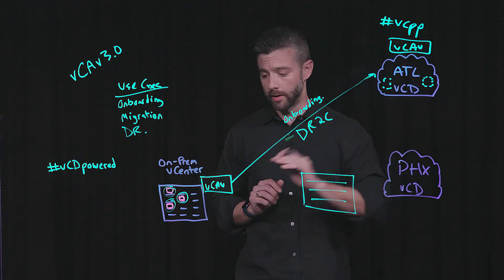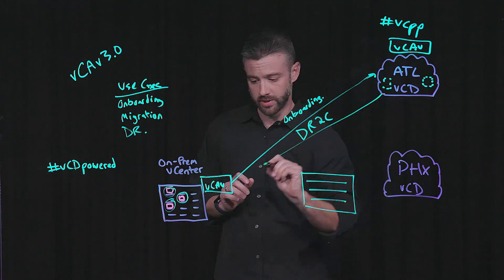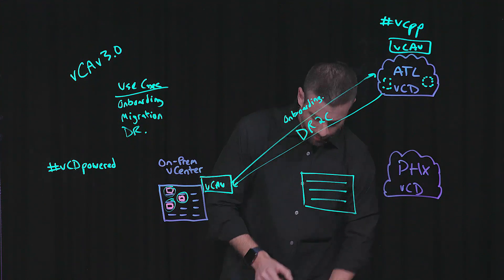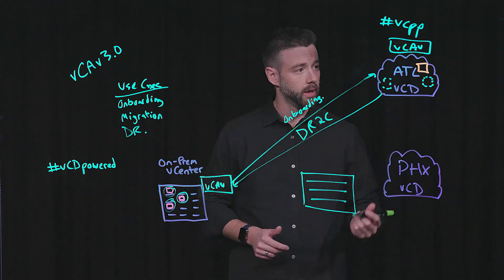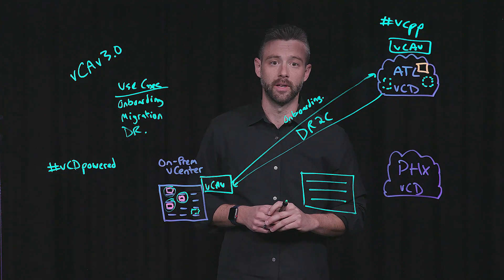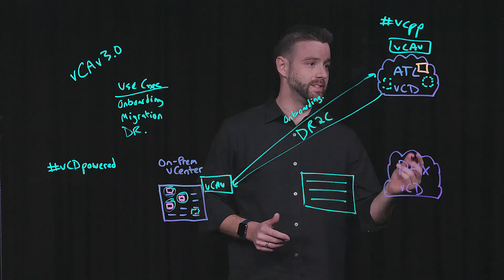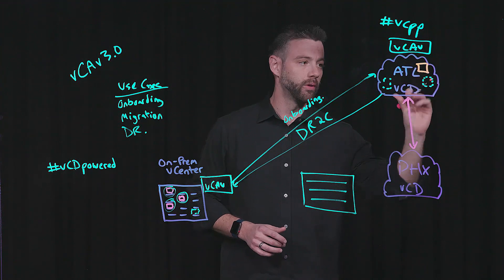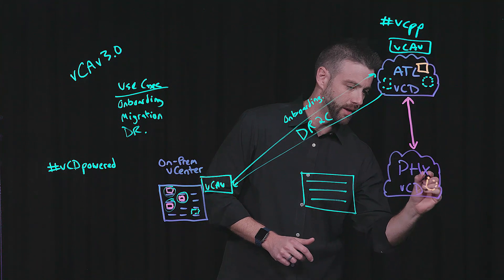Moreover, when we talk about DR to cloud, I can protect from on-prem VMs, but I can also protect back down to the on-prem vCenter. So if I have my org VDC and a virtual machine that resides in my Atlanta location and I want to protect it down to my on-prem vCenter, that is fully possible through vCloud Availability 3.0. And lastly, we can also integrate with existing vCloud Director environments, so I can set up a workflow to protect workloads at my Phoenix location.